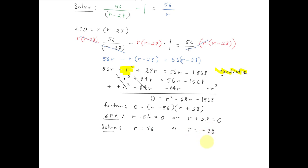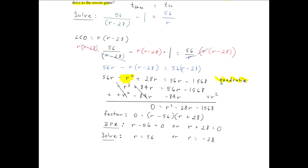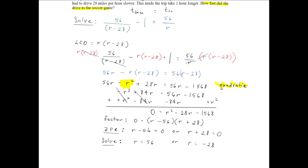Solving, we get r equal to 56, or r equal to negative 28. Now before you box your answer, let's remind ourselves what we're looking for. We're looking for how fast did she drive to the soccer game. Well, how fast does it mean she went negative 28 miles per hour? So we must omit the negative value, but accept the positive value. And so what does this mean? This means that she drove 56 miles per hour to the soccer game.